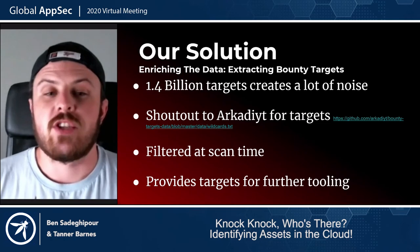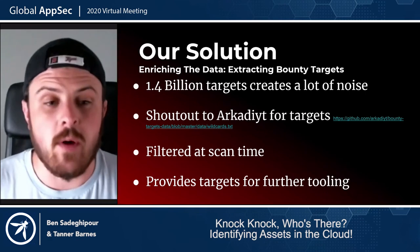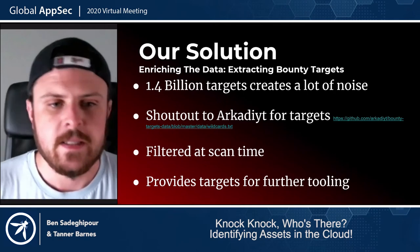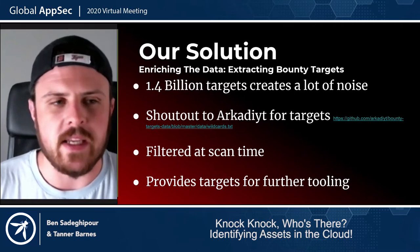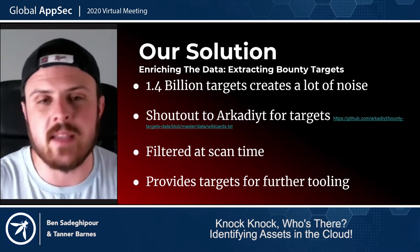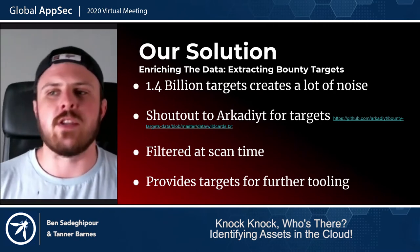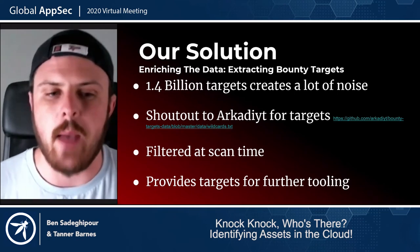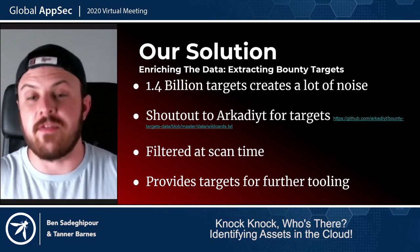Looking at extracting bug bounty targets — with 1.4 billion targets, there's a lot of noise. There's a repo called bounty-targets-data that was a huge help in getting a first crack at what is an interesting target. We filter them at scan time: as the scan is happening, we bifurcate the data and write them to two different locations, so we don't have to go through the data afterwards. This gives us our first set of targets to feed into further tooling.